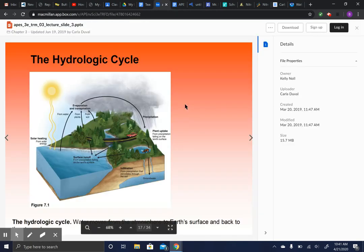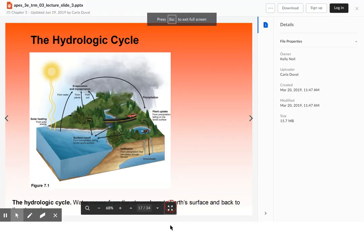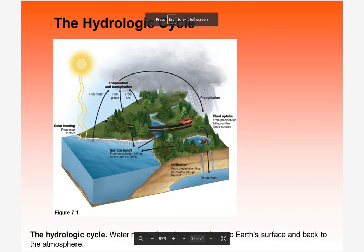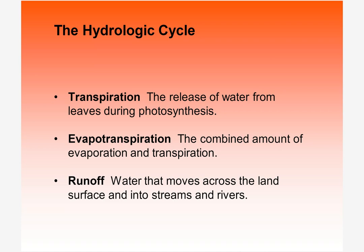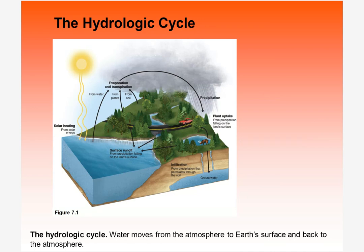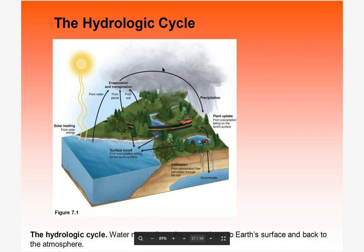So the water cycle — basically you have to think of the ways water is used and how it's produced. The sun heats up water, water evaporates from oceans, streams, rivers, lakes, and ponds. Transpiration also occurs from soil and plants — that's how water gets up into the atmosphere. Sublimation from snow is another pathway.